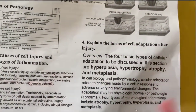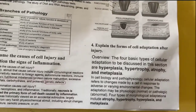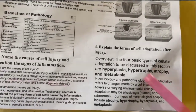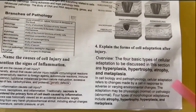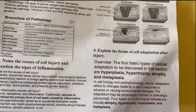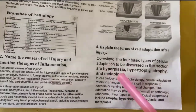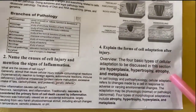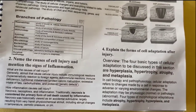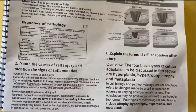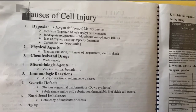Next question: explain the forms of cell adaptation after injury. There are four basic types of cellular adaptation: hyperplasia, hypertrophy, atrophy, and metaplasia. These are the four forms of cell adaptation.